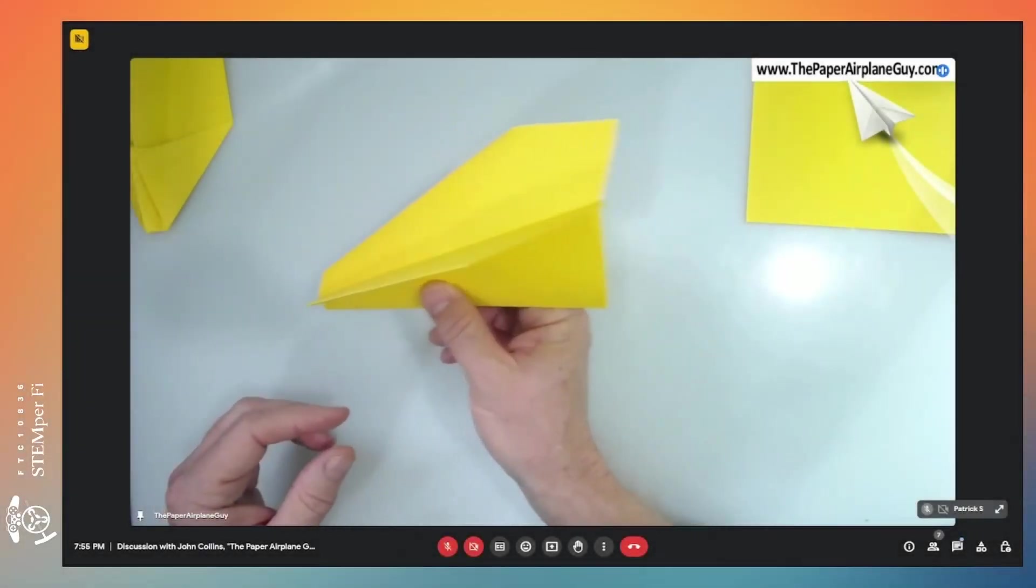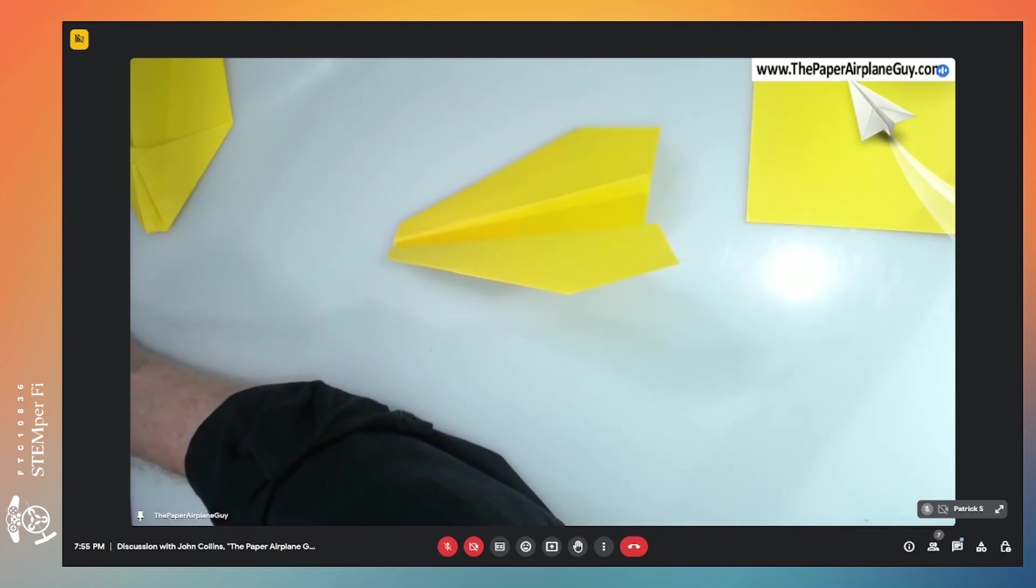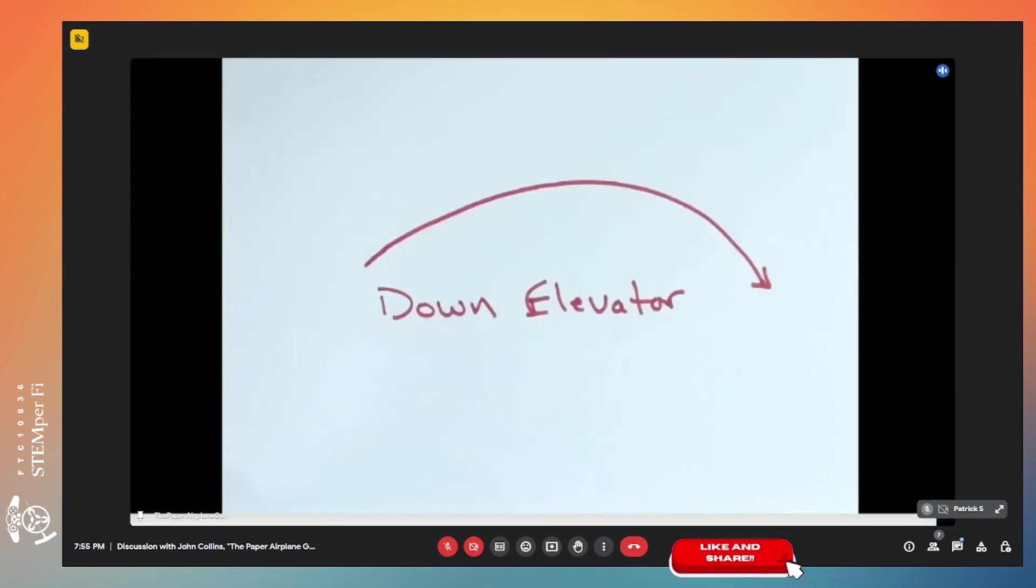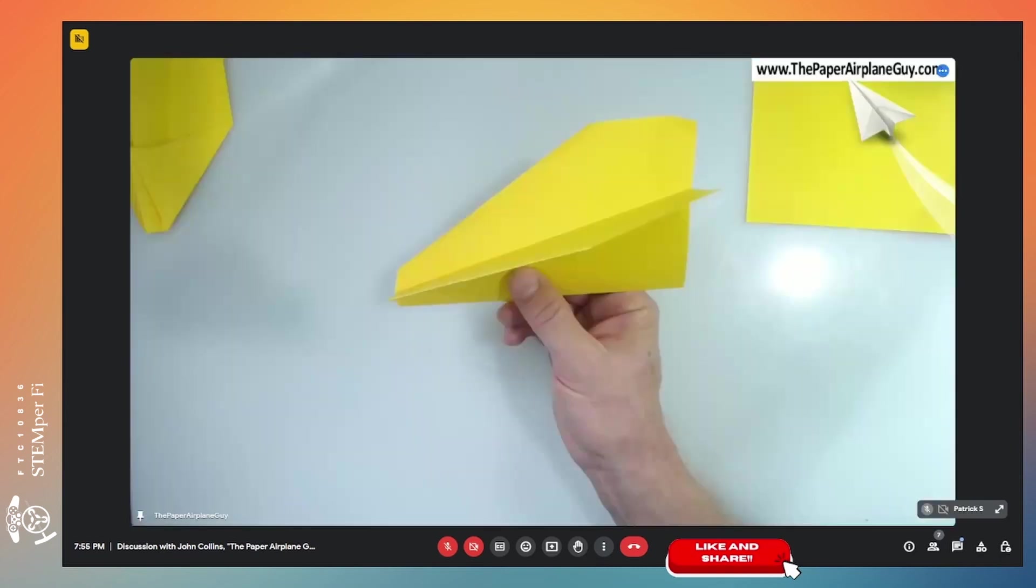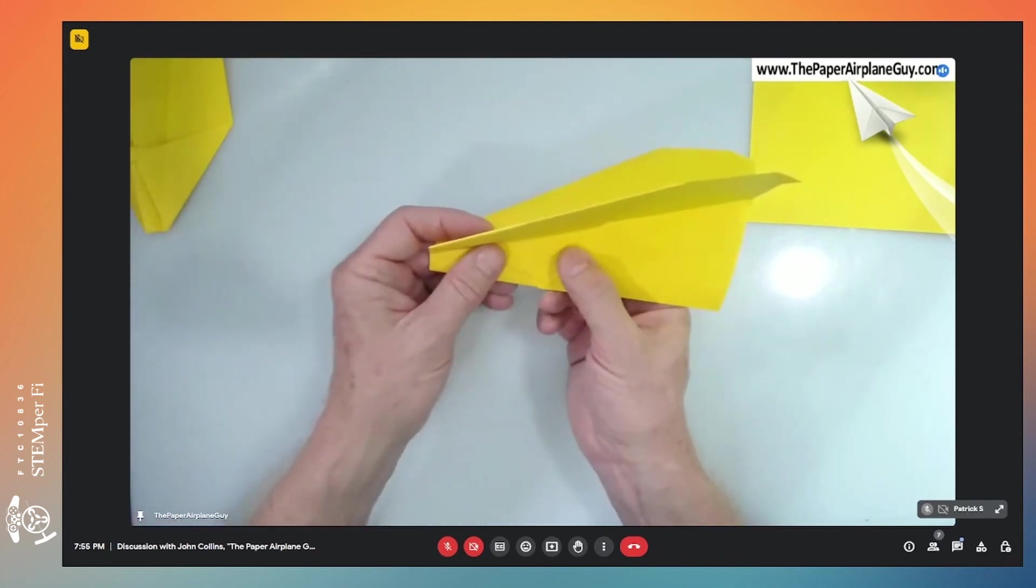It's automatically heading toward the ground and so you could take advantage of that with this sort of squashed arc idea. That's the idea behind that particular flight. The plane might naturally do that or if you add just a little bit of down elevator it'll accentuate that.